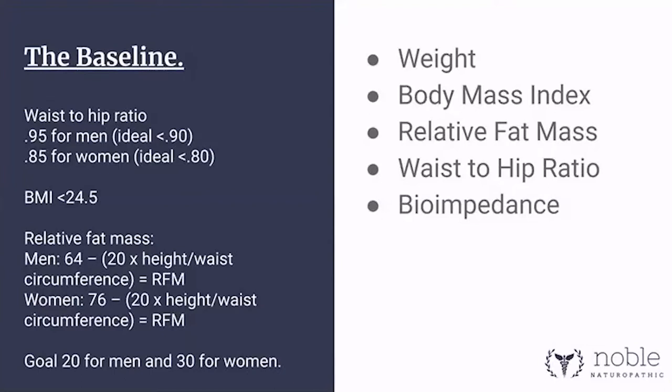But you don't really need one. You can use waist-to-hip ratio and shoot for the goals I put up on the left. For relative fat mass, if you can't get body fat percentage, you can use these goals: 20 for men and 30 for women. Those are good goals for relative fat mass. This is all about programming and tracking. I think an appropriate way to track these measurements is every 30 days.